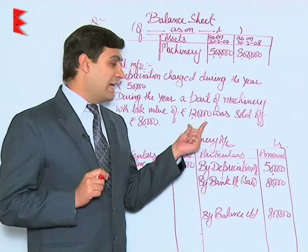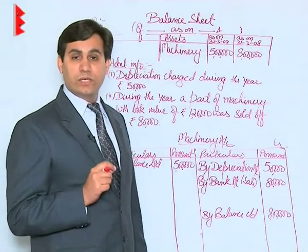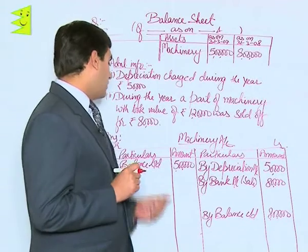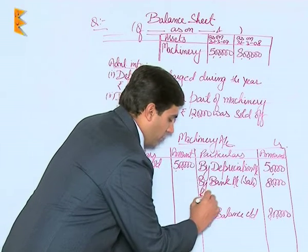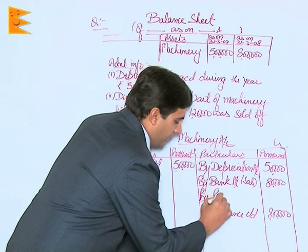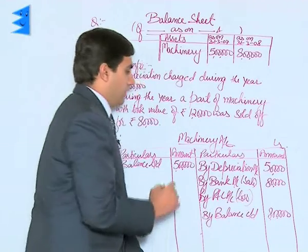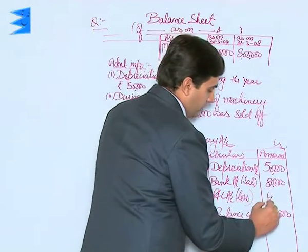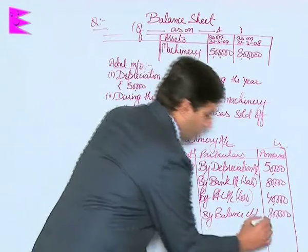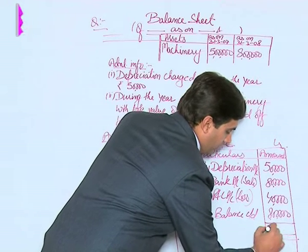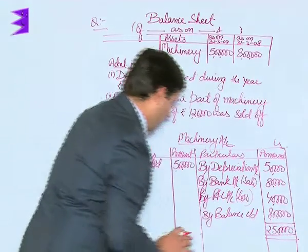The book value of the asset was rupees 1 lakh 20,000, and it has now been sold for just rupees 80,000, so there is a loss. Thus, the loss would be recorded as 'by profit and loss account — loss on sale,' which is rupees 40,000. Let us now total it out: the credit side comes to rupees 9 lakh 70,000.